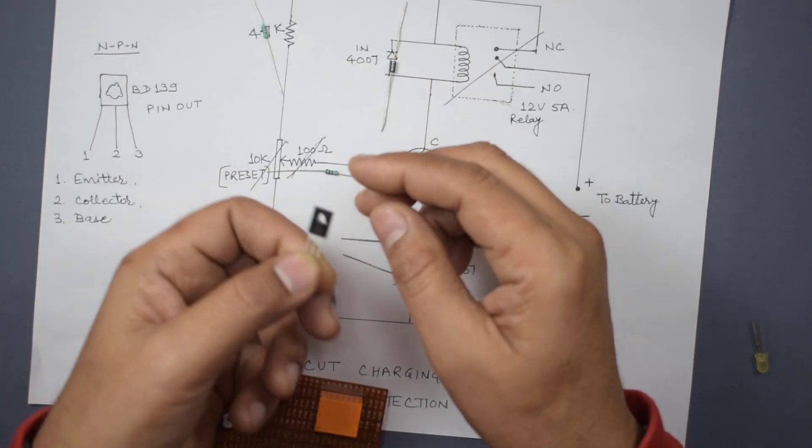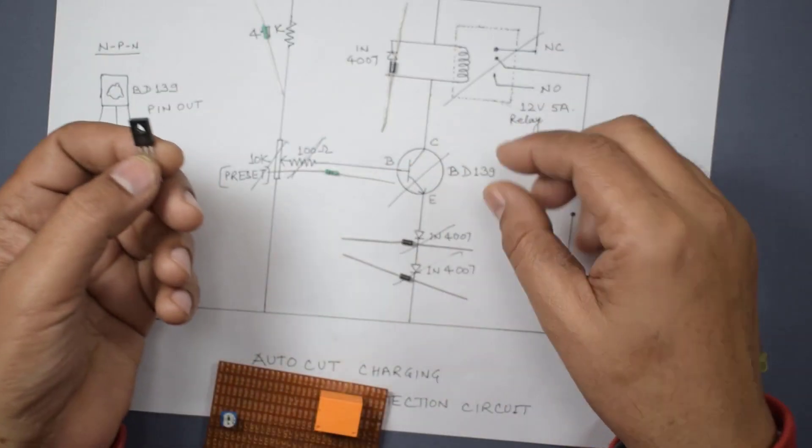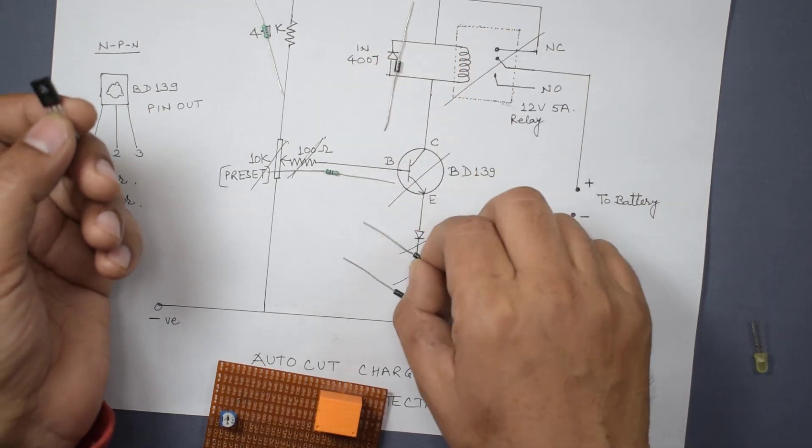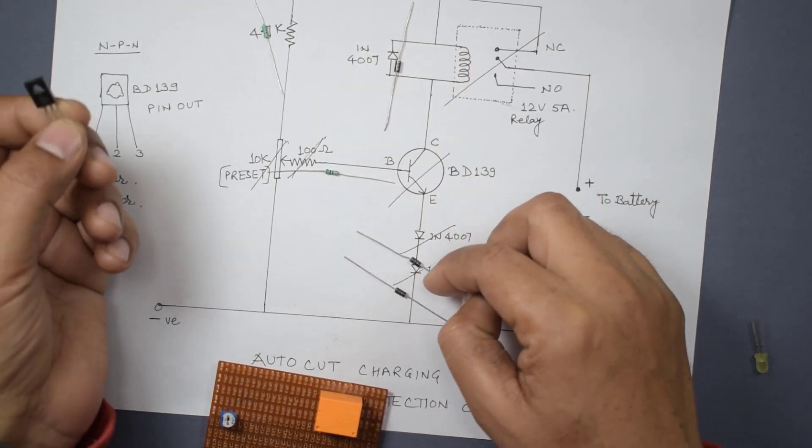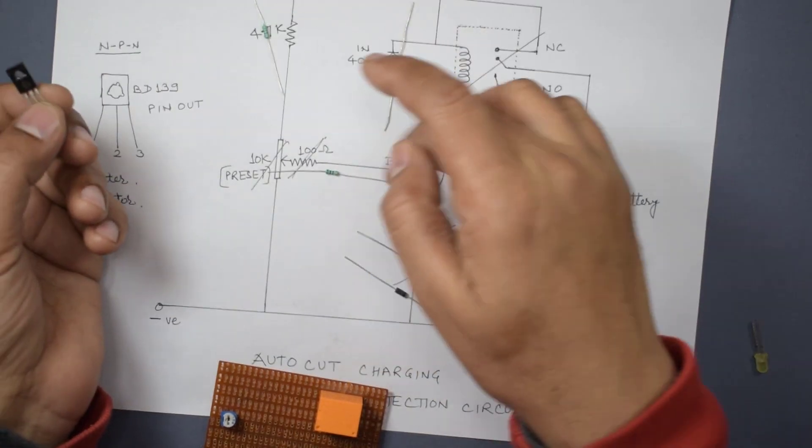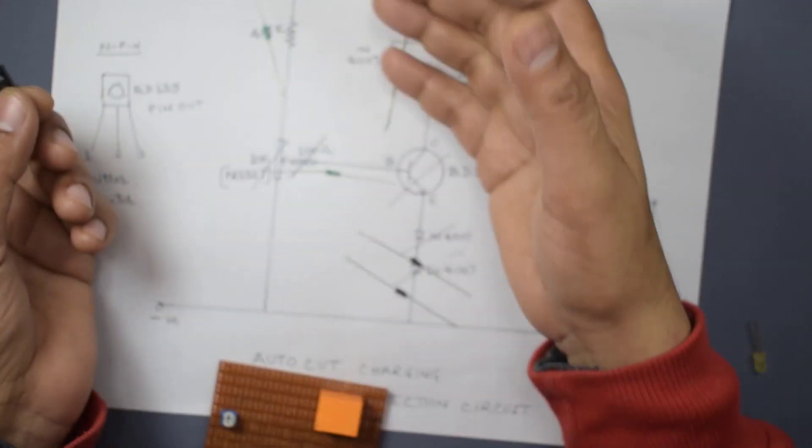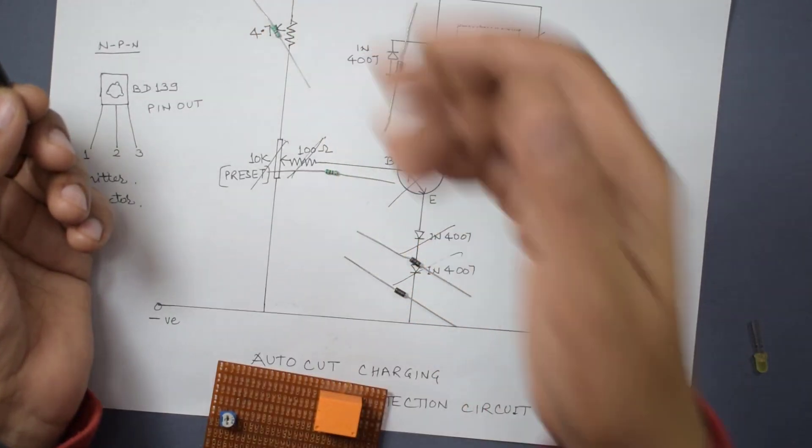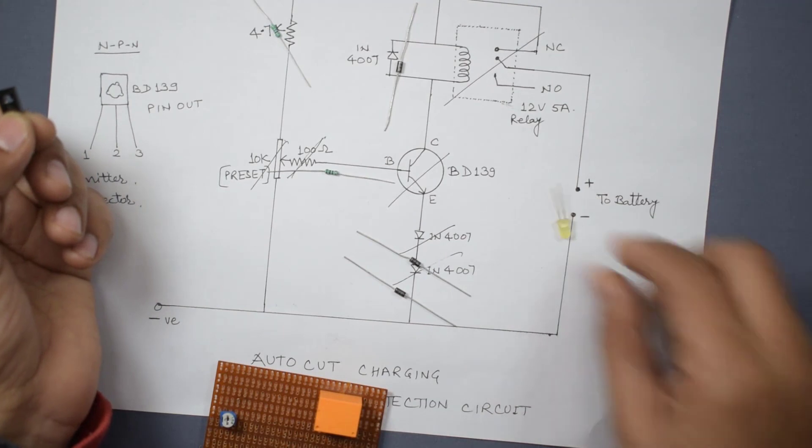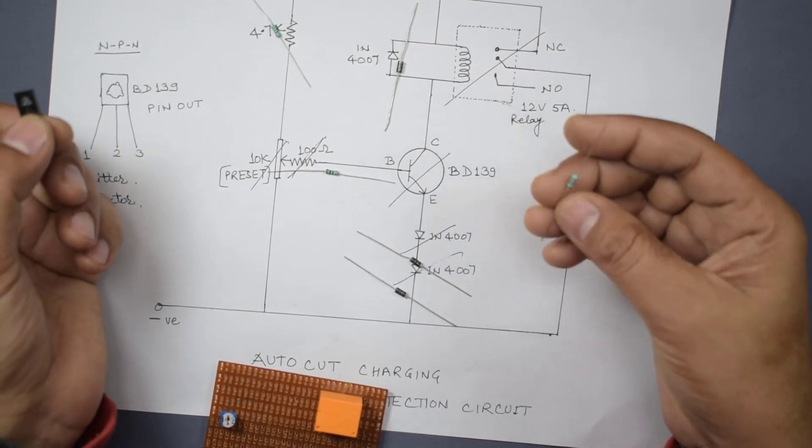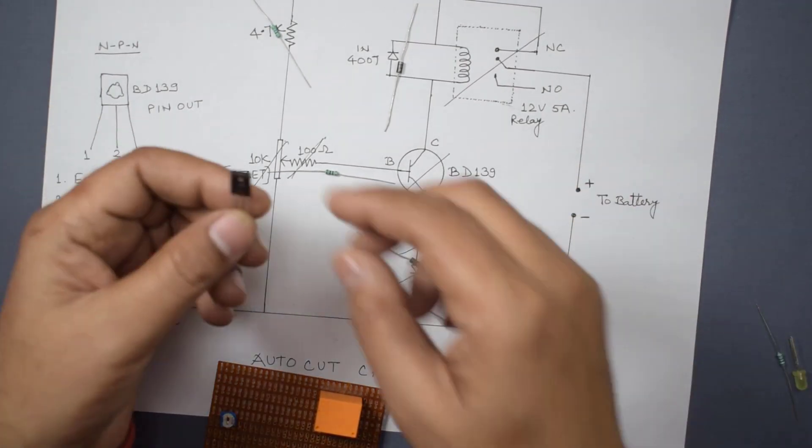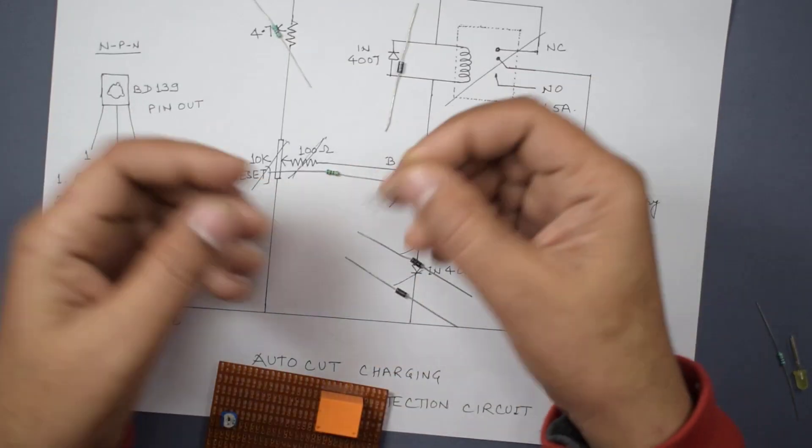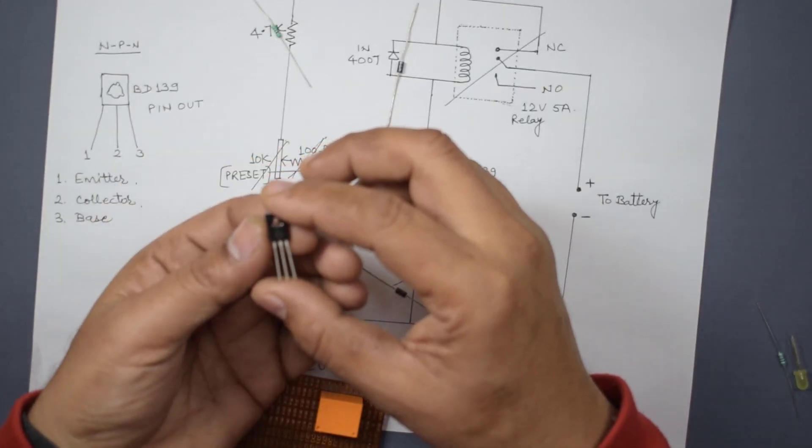The parts needed are one transistor that is BD139, it's an NPN transistor, and three diodes that is IN4007, two resistors one is of 100 ohm and another is of 4.7k, one LED bulb and one 1k resistor. Only these parts are needed to make this.